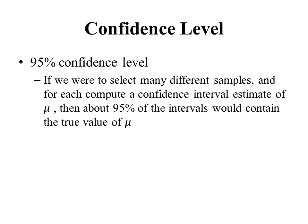We might ask: what exactly does a confidence level of 95% mean? A 95% confidence level means that if we were to select many different samples and for each compute a confidence interval estimate of mu, then about 95% of those intervals would contain the true value of mu. So if we did a whole bunch of different samples and calculated a confidence interval for each, some would contain the true value of mu and some wouldn't — but about 95% of them would.